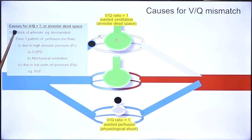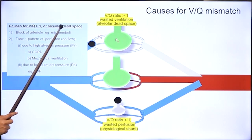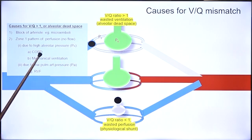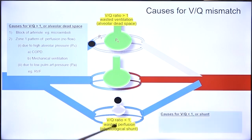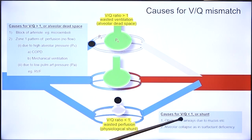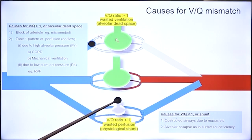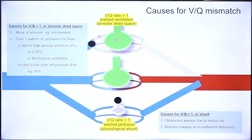So there are three important causes for alveolar dead space: microemboli in pulmonary circulation, high alveolar pressures as in COPD and mechanical ventilation, and low pulmonary arterial pressures as in right ventricular failure. Physiological shunt occurs when there is blockade of the bronchioles — as with a mucus plug due to bronchiolitis or bronchitis — or alveolar collapse as in surfactant deficiency, seen in neonatal respiratory distress syndrome. Thank you for your attention.